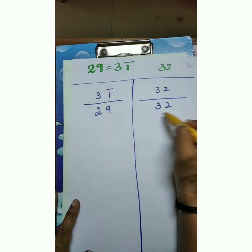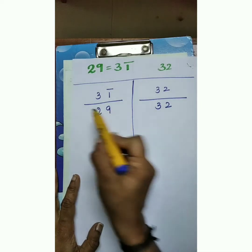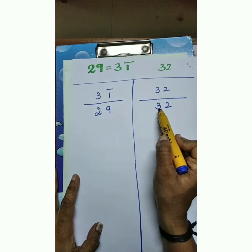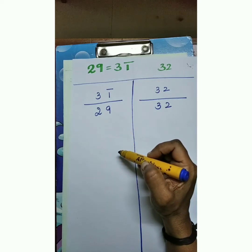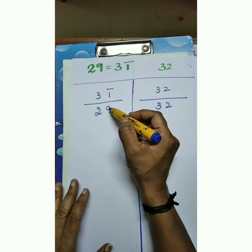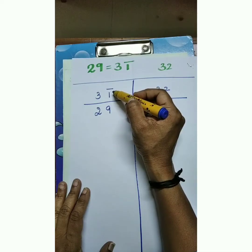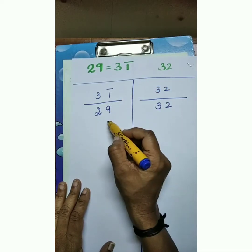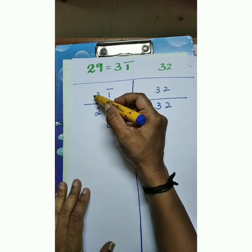This is the first level answer: 29 into 1 equals 29, and 32 into 1 equals 32. Now, how to find out the second level answer? That is 29 into 2. First step: bar 1 means minus 1, so 9 minus 1 equals 8. And here 2 plus 3 equals 5.